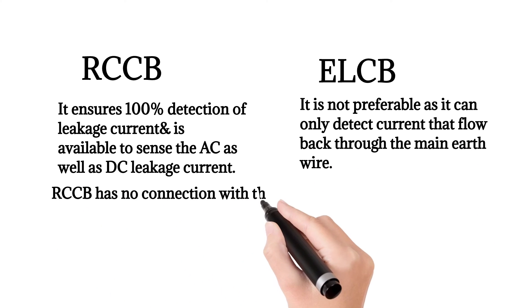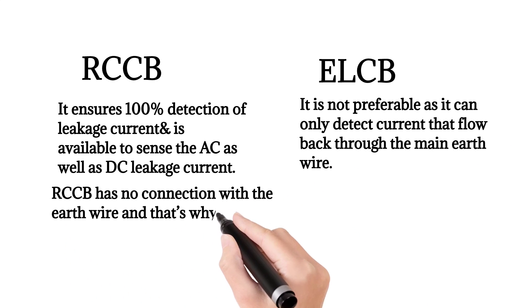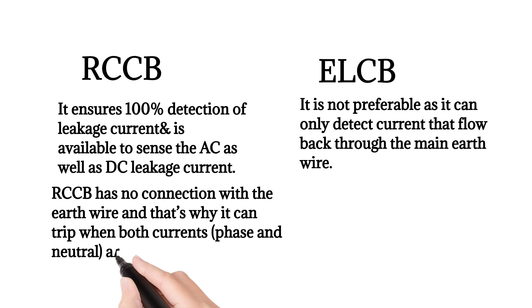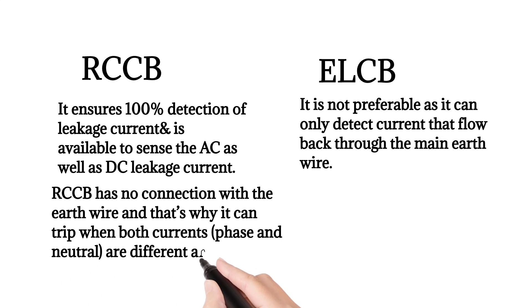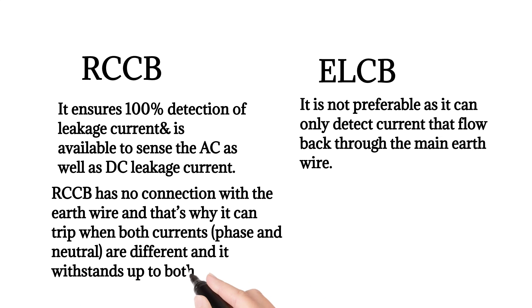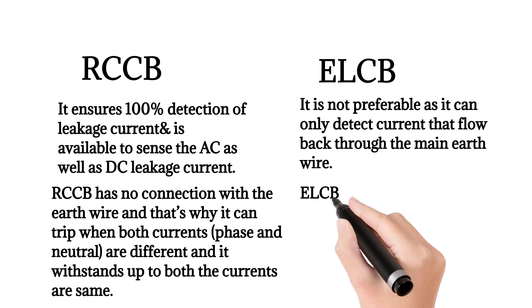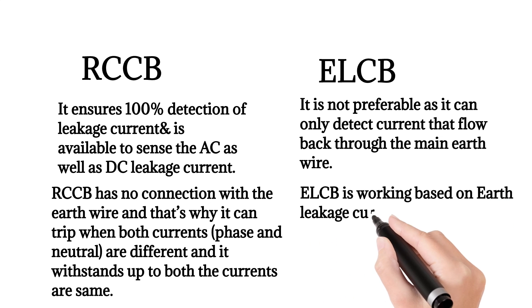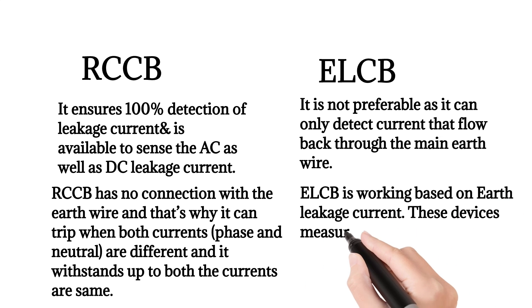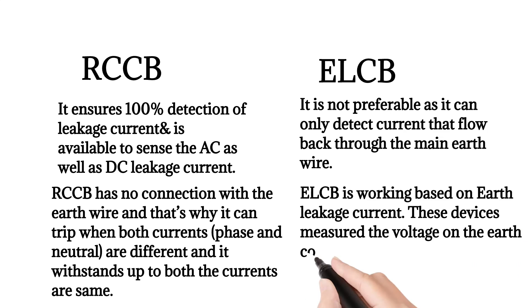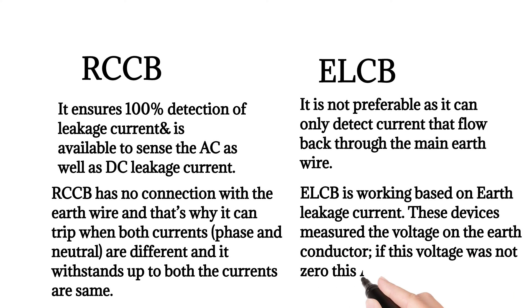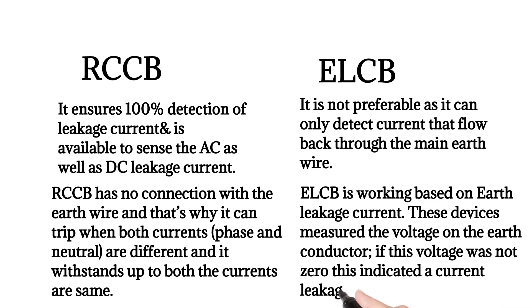RCCB has no connection with the earth wire, and that is why it can trip when both phase and neutral currents are different, and it holds when both currents are the same. ELCB works based on earth leakage current — these devices measure the voltage on the earth conductor. If this voltage was not zero, it indicated a current leakage to earth.